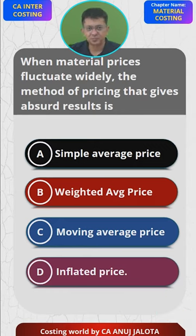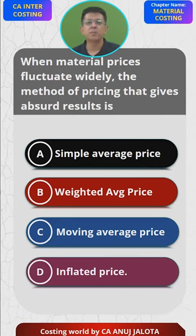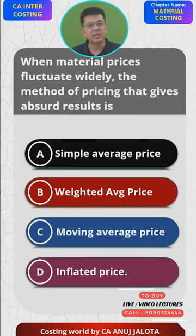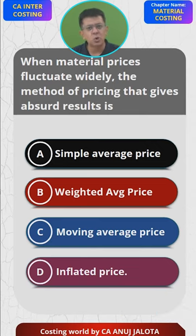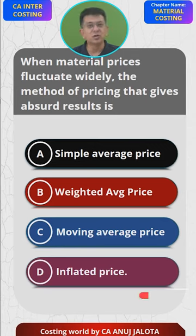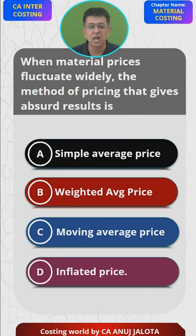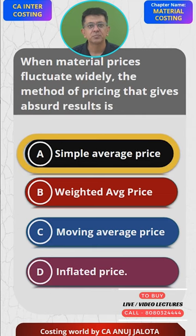So A — simple average — will give all weird results. B — weighted average — will give you the best results. C — moving average — will give far better results because it takes into account the last two or three prices. D — inflated price — will also not give absolutely worse results because usually prices keep on rising, so inflated price method will usually give an okay result, although not very great, but still better compared to simple average. So the answer out of the four is A — simple average. Yes, that's the correct one.